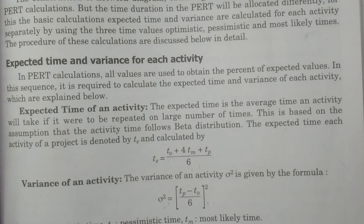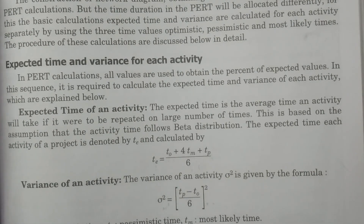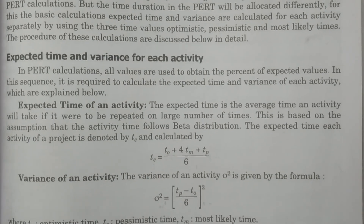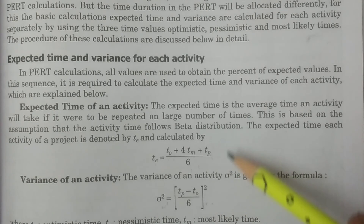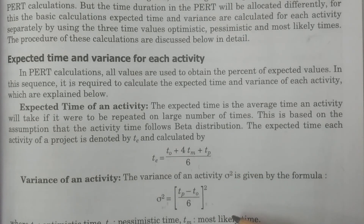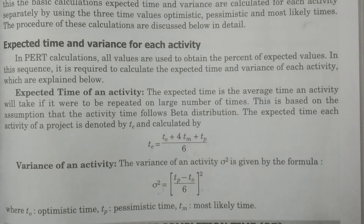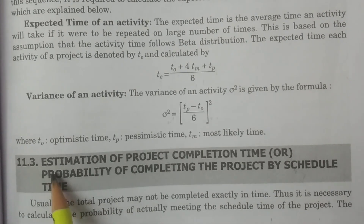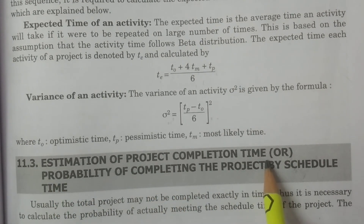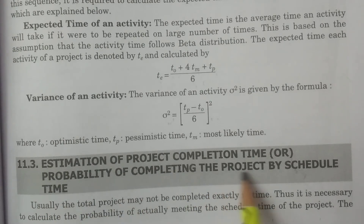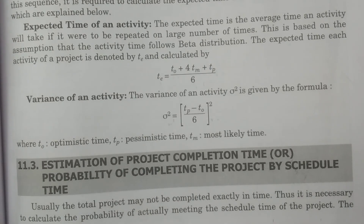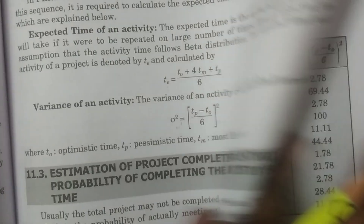The variance σ²E for the project is calculated for all critical activities by simply adding their individual variances. These are the expected time and variance calculations in PERT. One more important thing: we also need to calculate the estimation of project completion time, or the probability of completing the project by the scheduled time, both of which are calculated using the normal distribution.